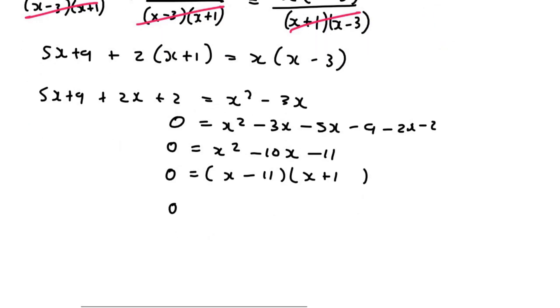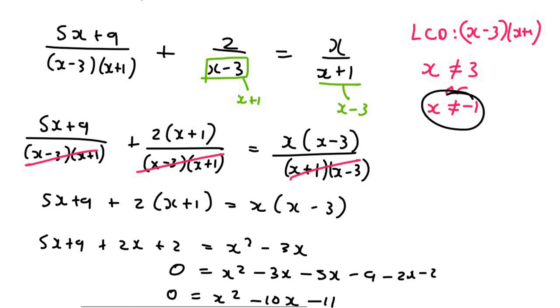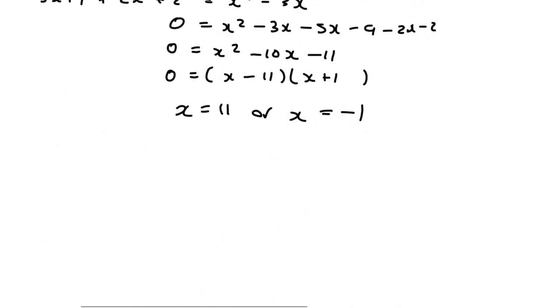And so, therefore, x is going to equal to 11 or x is going to be equal to minus 1. But now, if we go to our restrictions, x was not allowed to equal to negative 1. And so, for that one, we'll say Na. So, therefore, x can only equal to 11.